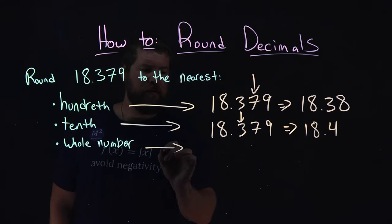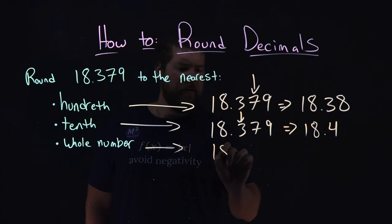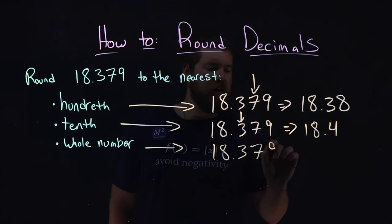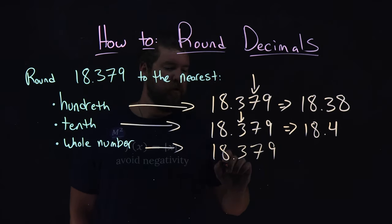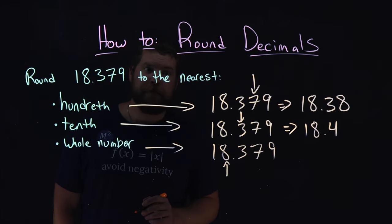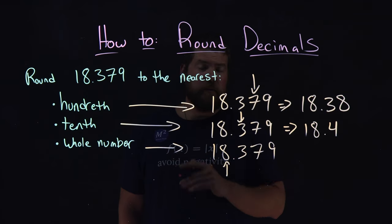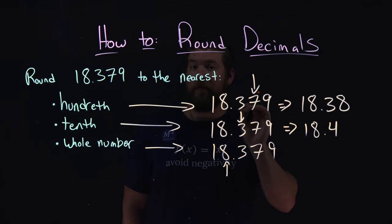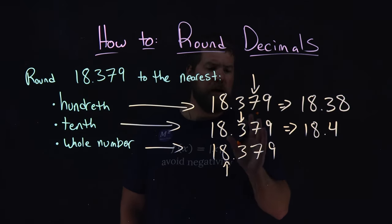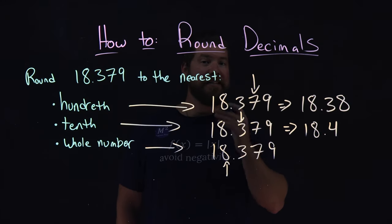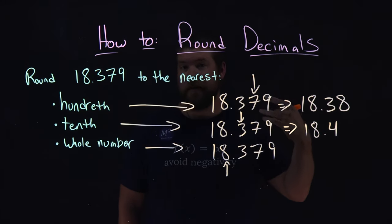Now, lastly, we have the whole number. We take, again, that 18.379, but the whole number digit we're looking at is the 8. We start with the 8, and again, we look to the right. 3 is between 0 and 4, including 4, right? Because 5 and up, we round it up. 0 to 4, we round down.